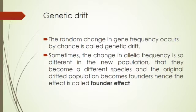The next factor is genetic drift. Genetic drift is the random change in gene frequency that occurs by chance. Natural disasters are an example of events causing genetic drift. Sometimes the change in allelic frequencies is so different in the new population that they become a different species.